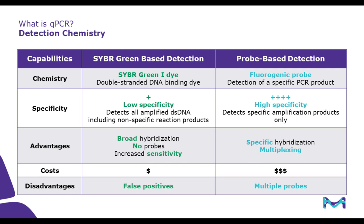Real-time qPCR falls under two categories: SYBR Green or probe-based detection. SYBR Green-based detection uses SYBR Green I dye, which binds to double-stranded DNA to detect PCR product. This method will detect all amplified double-stranded DNA, including nonspecific reaction products. Researchers can choose SYBR Green over probe-based detection because it is more affordable and enables monitoring of amplification of any double-stranded DNA sequence. Additionally, multiple dye molecules can bind to a single amplified molecule, which increases sensitivity for detecting amplification products. The disadvantage is that the dye itself can be an inhibitor and can bind to nonspecific DNA sequences, sometimes leading to false positives.